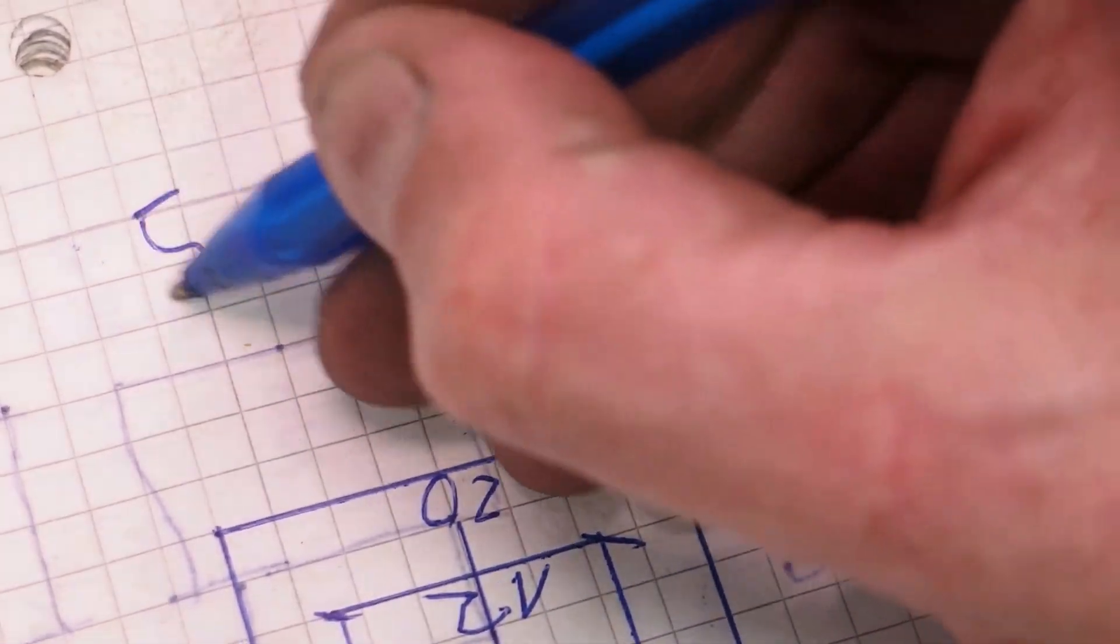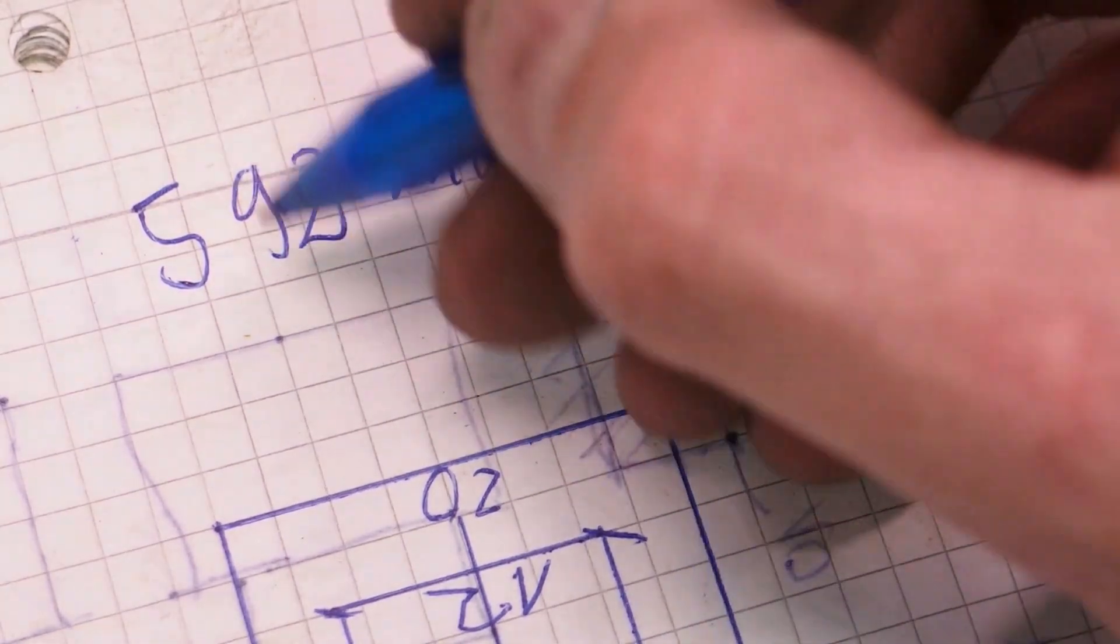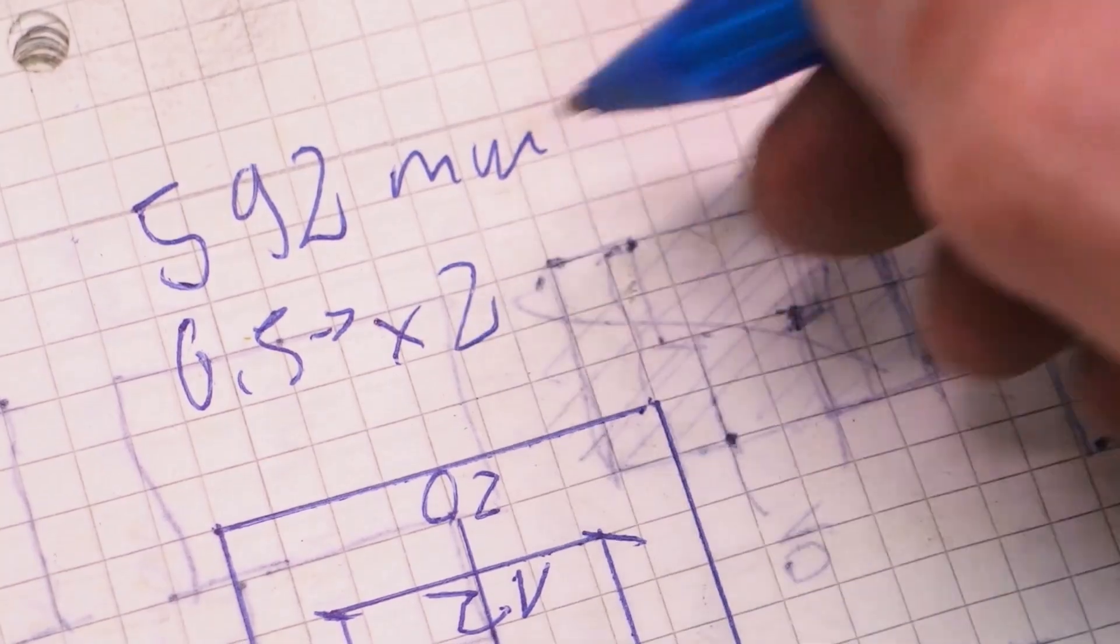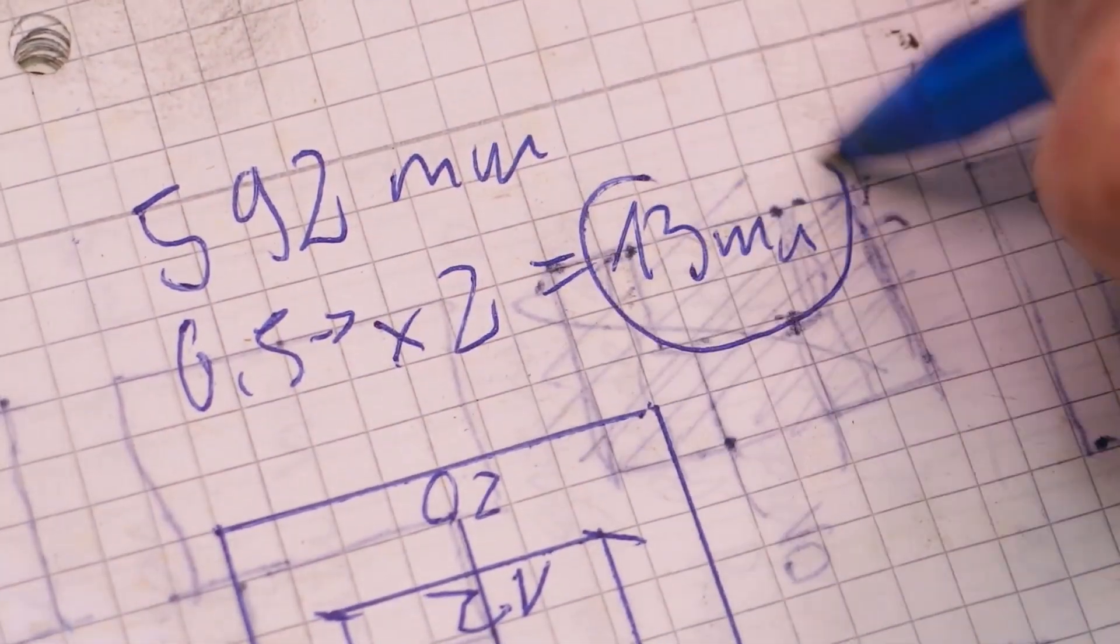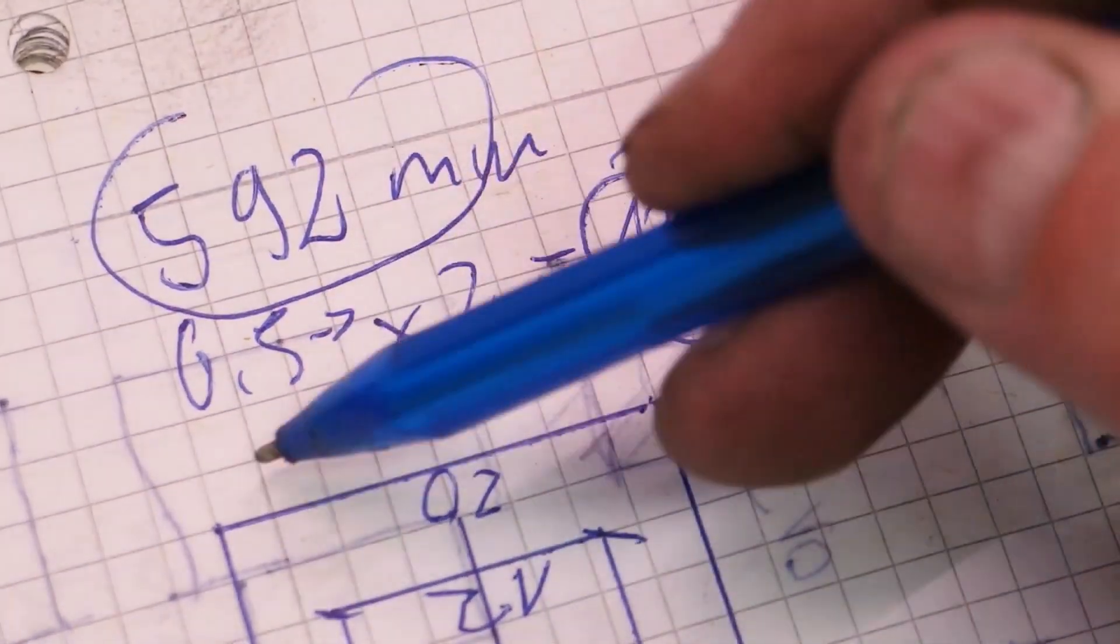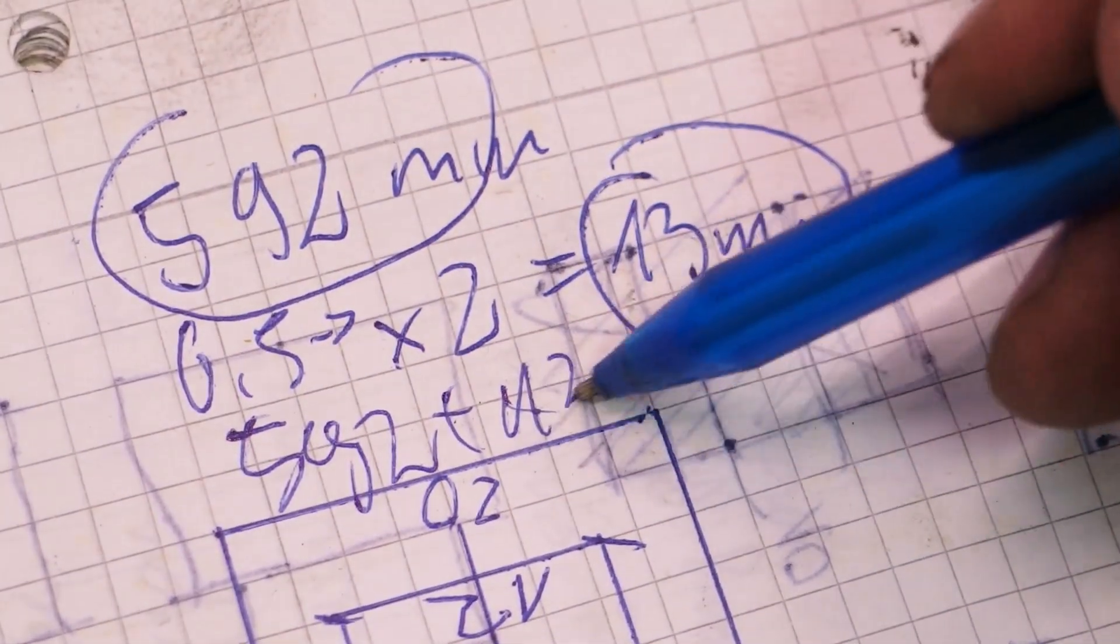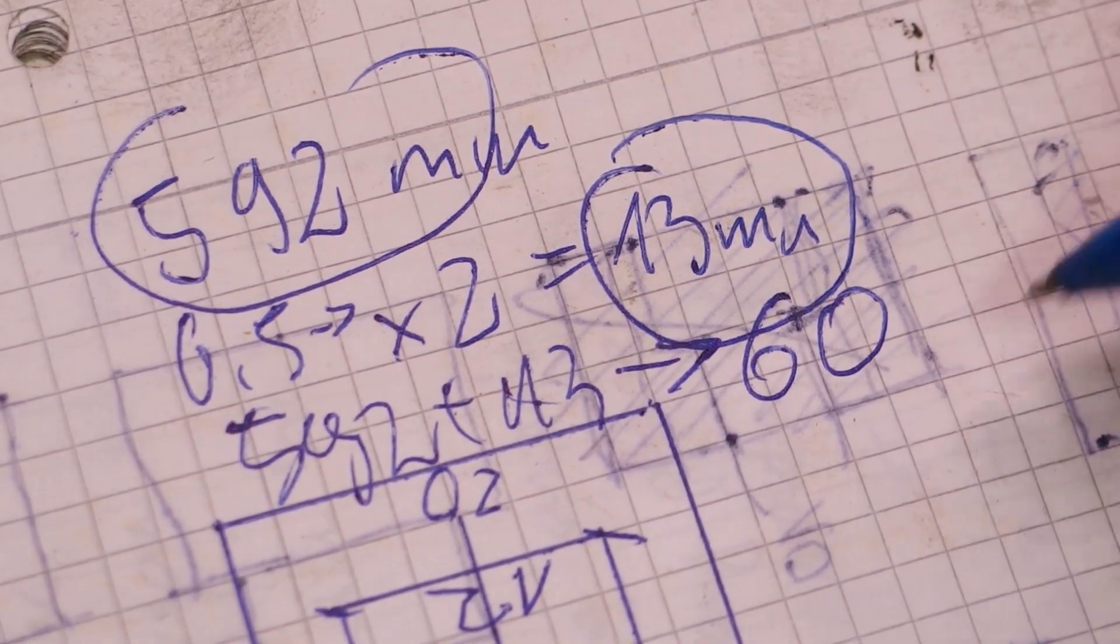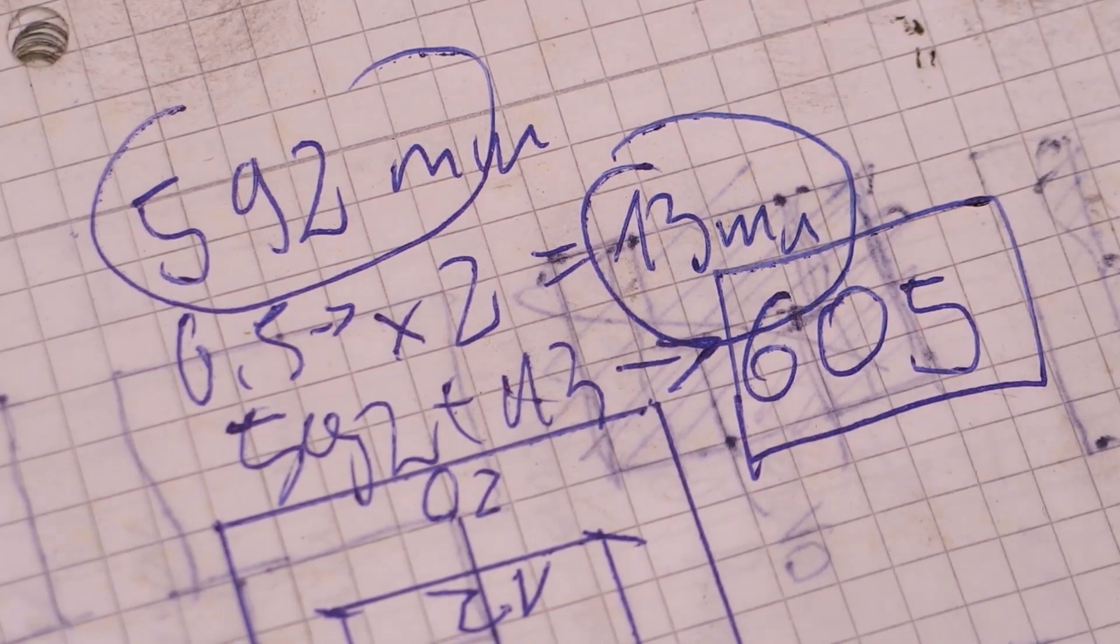We measured 592 millimeters for the inside of the rim and 6.5 for one nipple. You multiply this by 2, which is 13 millimeters. We add this value to that value, which is 592 plus 13, which equals 605, and this is your effective rim diameter.